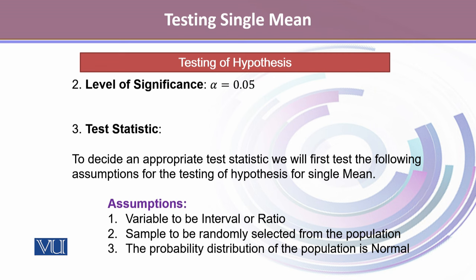We state the level of significance alpha to be 0.05. We then verify our assumptions: the variable is interval/ratio since it is a continuous, ratio-level variable; the sample is stated to be randomly selected from the population; and thirdly, we check that the population distribution is normal.